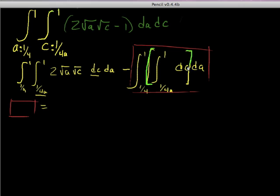The integral of dc is just c, and so we have c evaluated at one subtract evaluated at 1/(4a), and then we're going to continue. I don't want to skip any steps here so you can see the whole thing playing out.